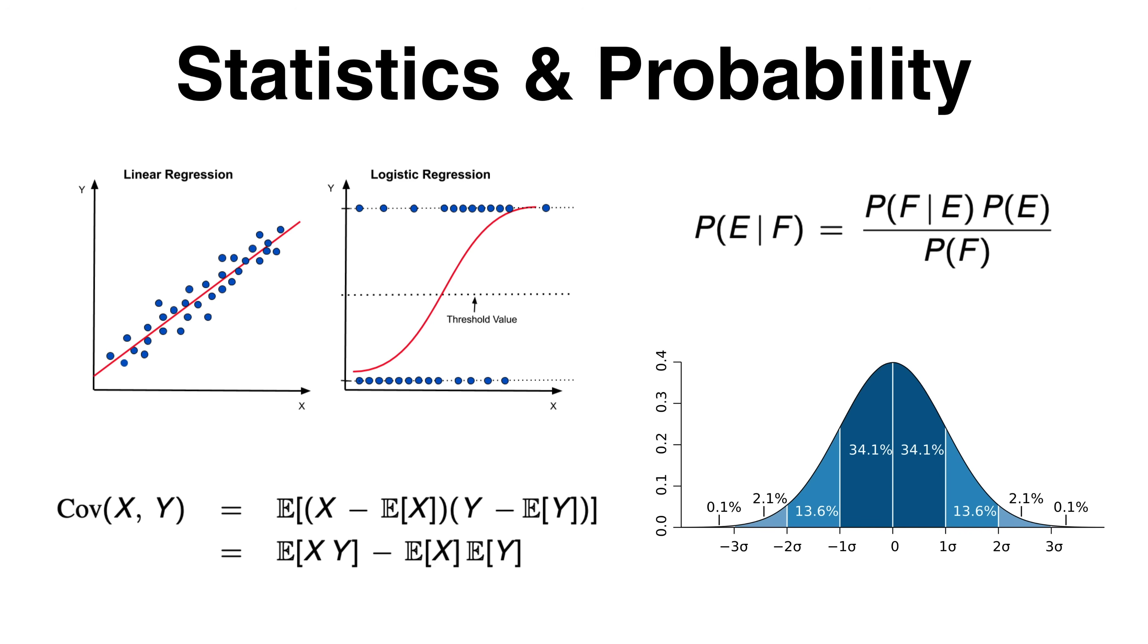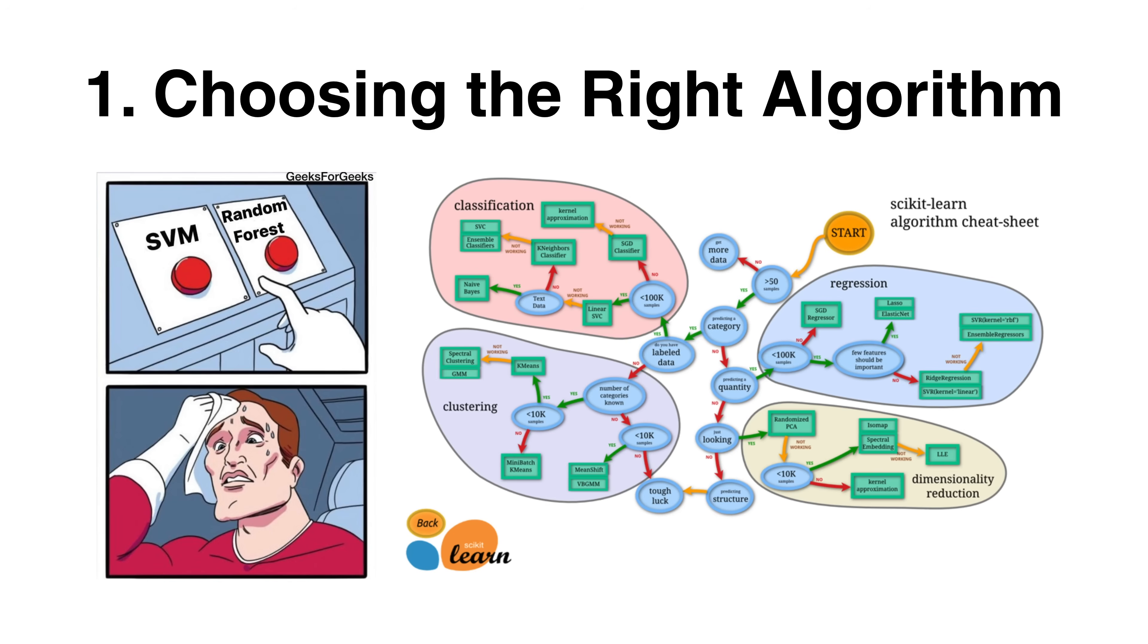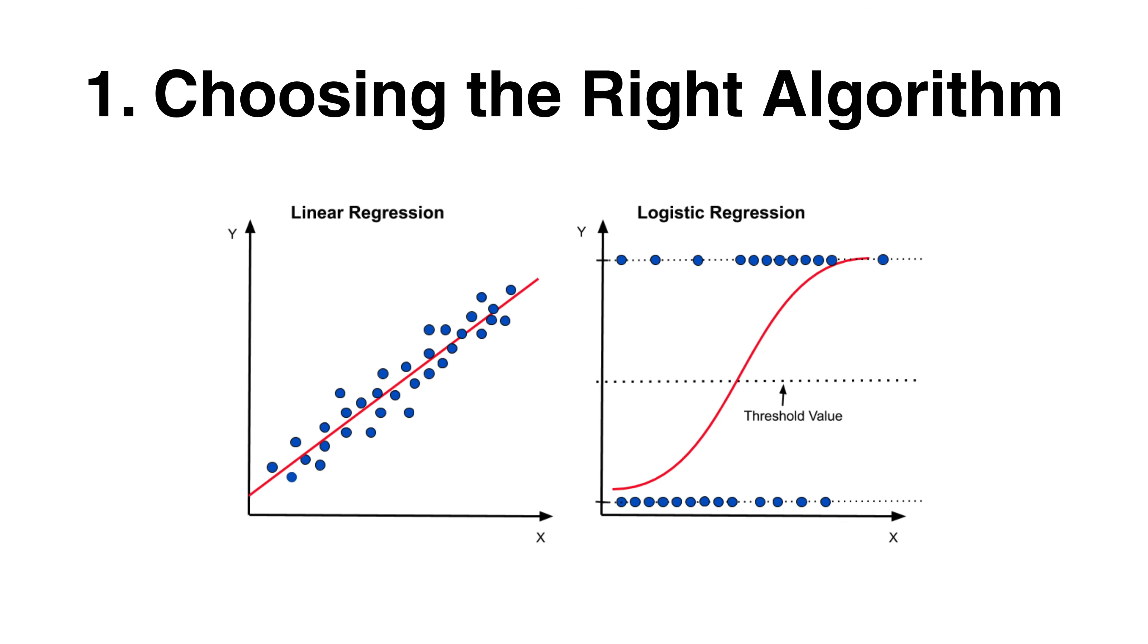Starting with statistics and probability. Having a solid statistical intuition helps you choose the right algorithm for the problem you're trying to solve, and just as importantly for the data you're working with. A lot of the time, you don't need anything overly complex. If you understand what your data is telling you, simple models can go a long way. This can save you time and reduce complexity.